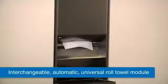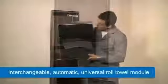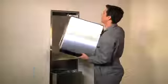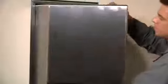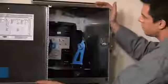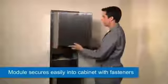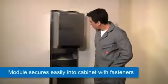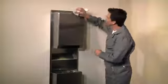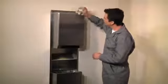The interchangeable roll towel module converts the existing folded towel and non-automatic touch-free dispensers. It fits all Bobrick classic series towel and waste units. The existing folded towel module is removed, then the interchangeable roll towel module slides neatly into place, retaining the design and material continuity of the original unit.